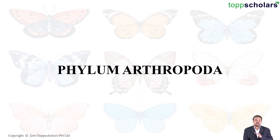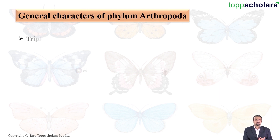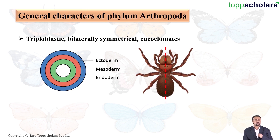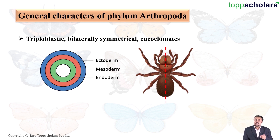Let us begin the general characters of Phylum Arthropoda. First, these organisms are all triploblastic, bilaterally symmetrical, and eucoelomates. As you can see in the diagram, all three germ layers are shown, which tells us that in the embryo of these animals, all three germ layers are formed: ectoderm, mesoderm, and endoderm.